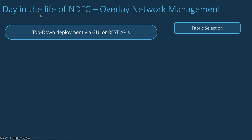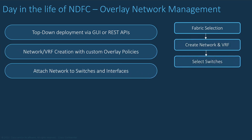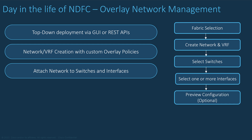The RESTful API approach to automate the deployment of Overlay Networks will be covered in the next sections. Regarding the deployment of the network, the first action from the network page is to select the fabric where you want to create or operate the network. Create the network and VRF with the Overlay parameters, then attach the network to the concerned switches and interfaces. You can always preview the configuration pushed by NDFC to each device, and then deploy. It generally takes several seconds based on the number of switches and interfaces.